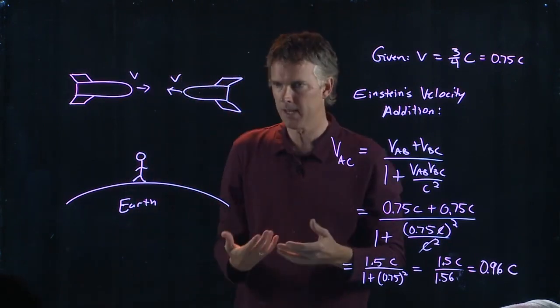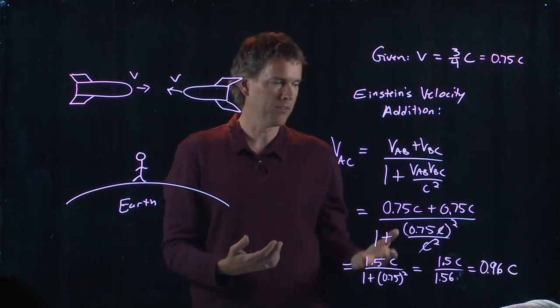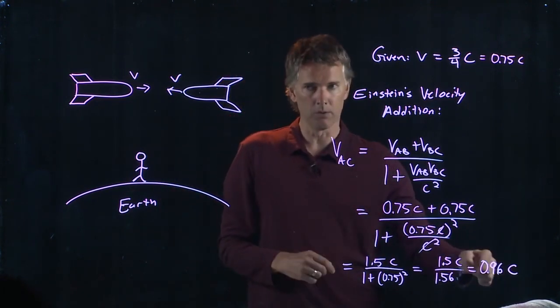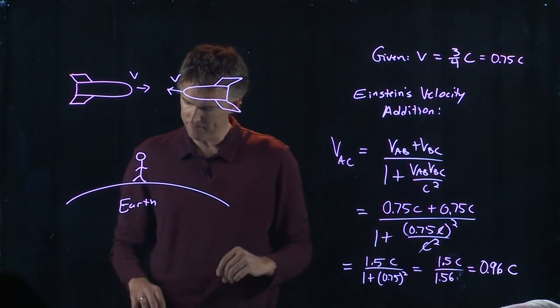We know that any time you make a measurement, it can't be bigger than C, and so it has to be something less than C, but it's pretty close to C in this case because of the way those velocities add up.